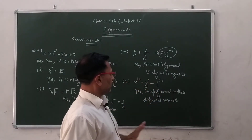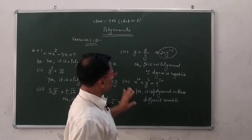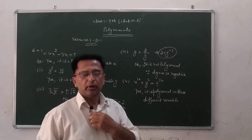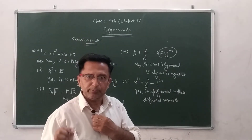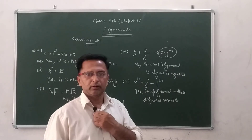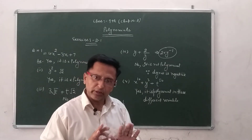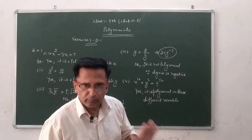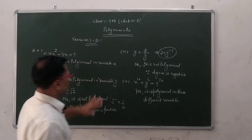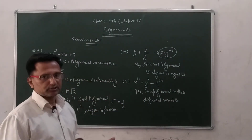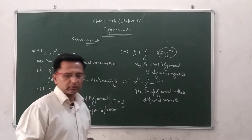Number five is a polynomial in three different variables. So that is the solution to Exercise 2.1, question number one. Thanks.